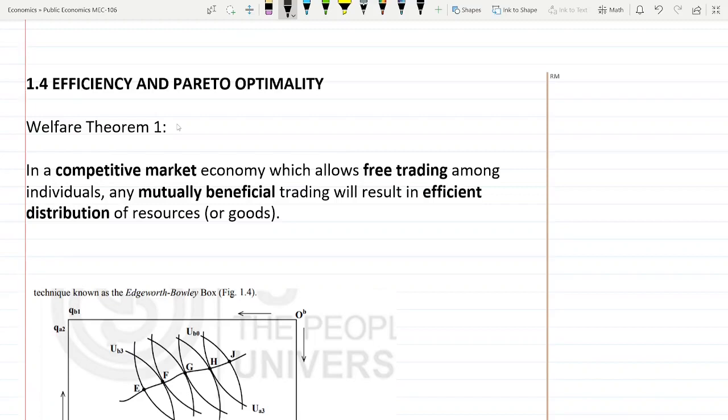Hello guys, this is the continuation of our series of public economics, and this is unit one. In this video we will cover efficiency and Pareto optimality. What is welfare efficiency and Pareto optimality? This is given by welfare theorems, the famous welfare theorem one and two.